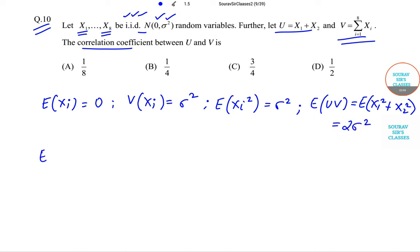Now E(U) times E(V), that is expectation of U times expectation of V, is 0. Let us find the variance of U. The variance of U is 2σ². Similarly, the variance of V is 8σ², because i runs from 1 to 8.